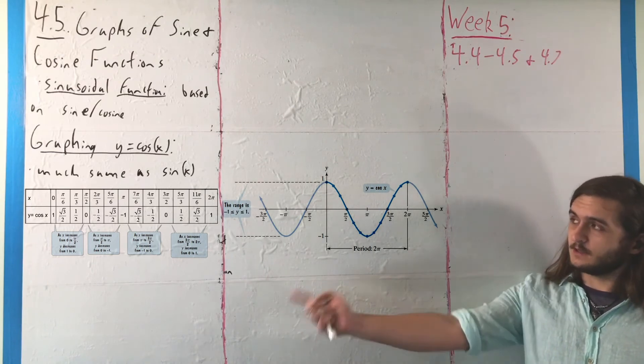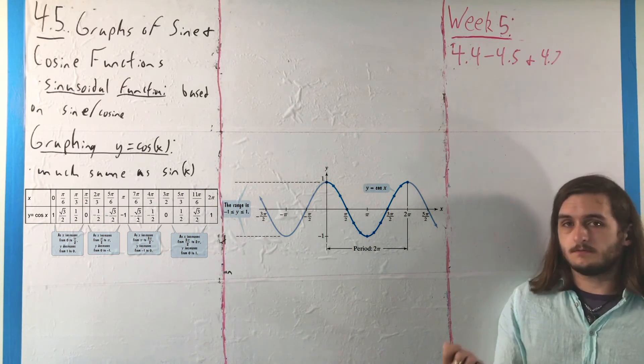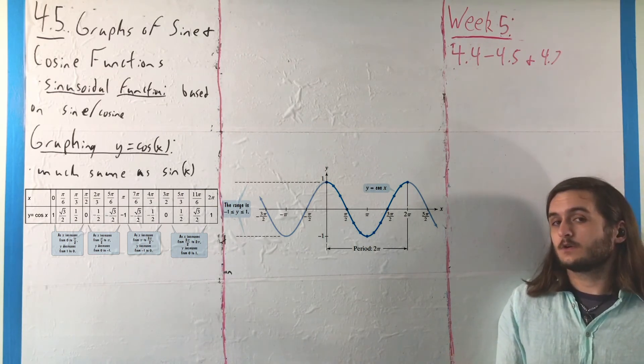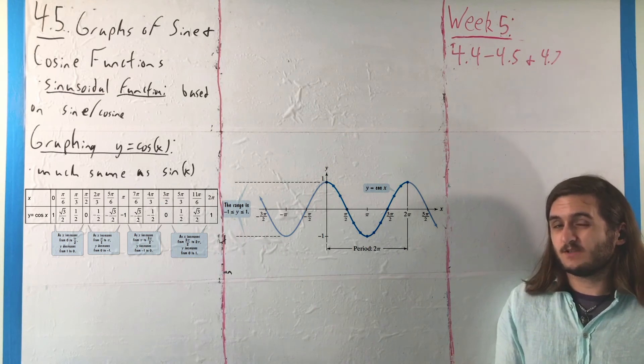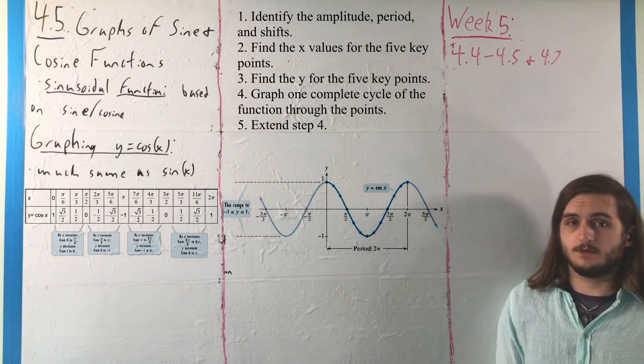much like how making the basic picture went the same way as it did with sine, when we're making varied versions of cosine, we'll follow the same five steps that we did for making pictures of sine, and we'll see one of those next.